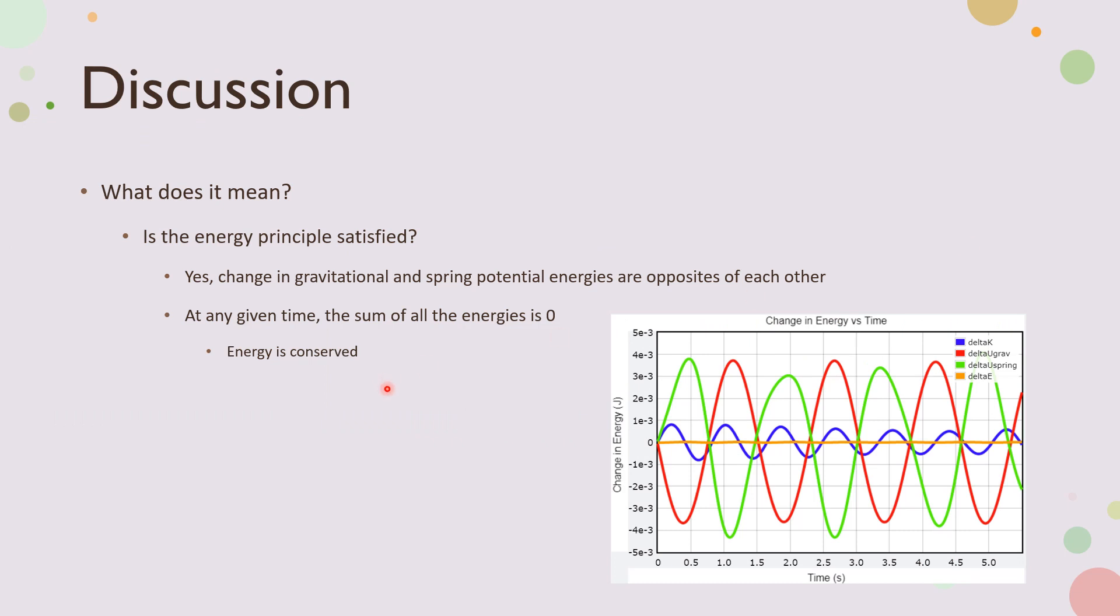So what does it mean? Is the energy principle satisfied? Well, yes. The change in gravitational and spring potential energies are always opposites of each other. At any given time, the sum of all the energies is zero, as you can see by this orange line. So energy is conserved. And even at this point, you can see if you add up the gravitational potential here, spring here, and that gives you zero, as well as with the kinetic.